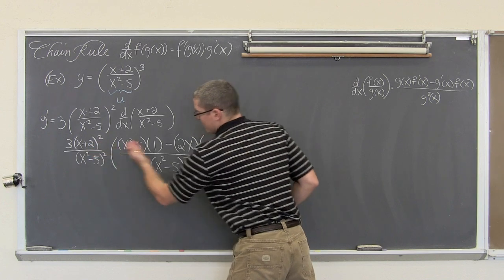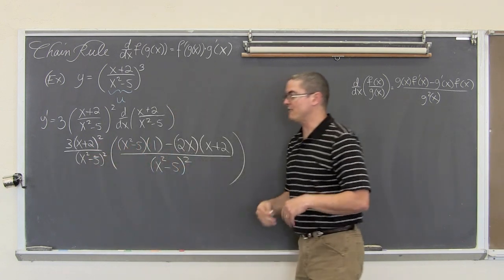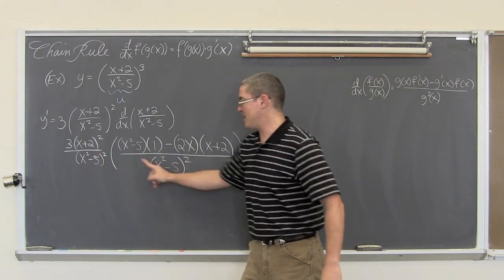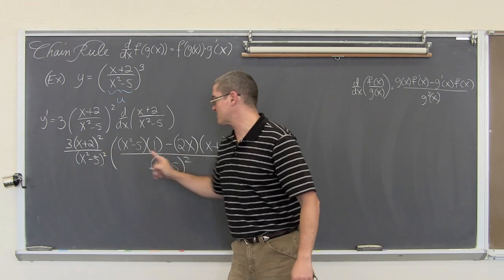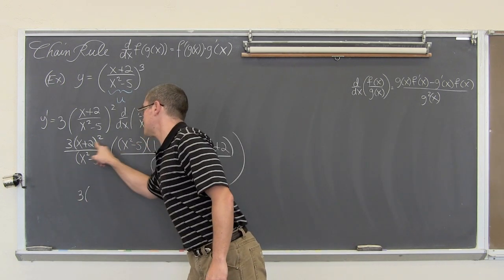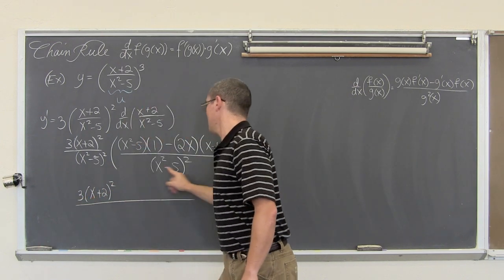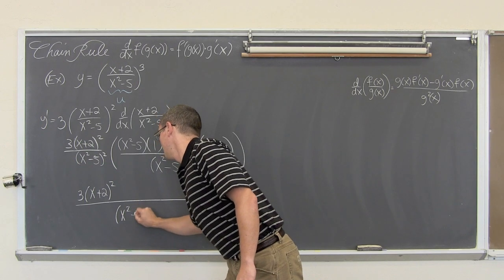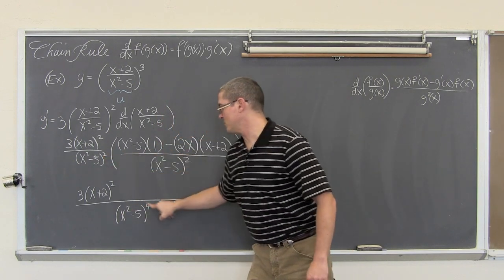Through this multiplication we have the same denominator in both factors. Any time you multiply like bases, you add their exponents. So we are going to have 3 times x plus 2 squared, all over x squared minus 5 raised to the 4th power — because 2 plus 2 is 4.